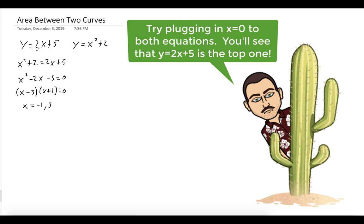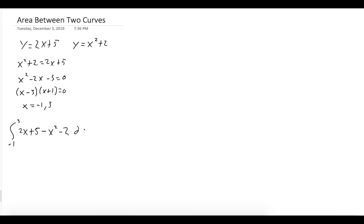So you could check by taking a value between negative 1 and 3 that 2x plus 5 is the higher of the two curves. So we want to evaluate the integral between negative 1 and 3 of 2x plus 5 minus x squared minus 2.